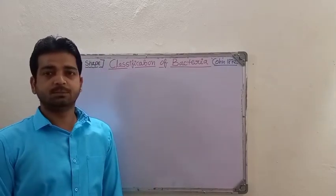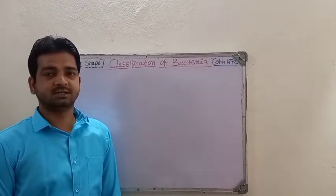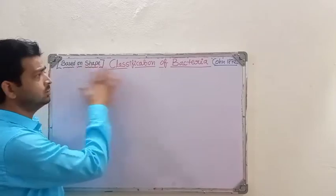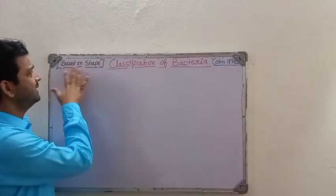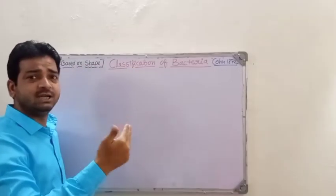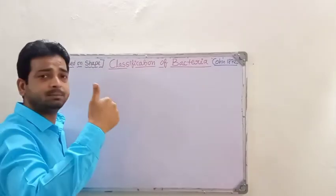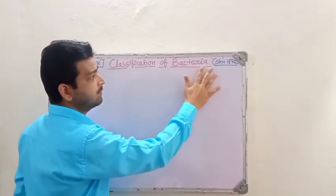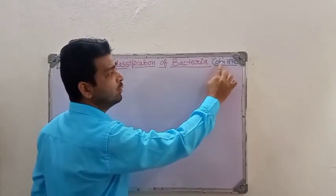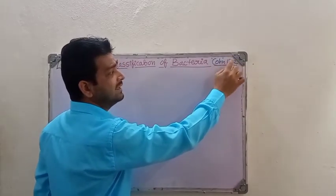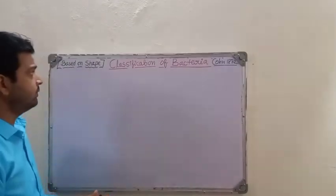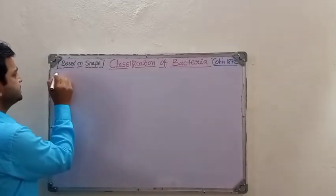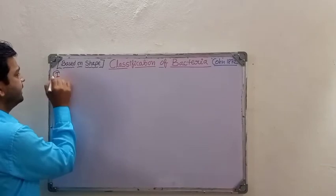Hello students, today we are going to discuss the classification of bacteria based on shape — what kind of structures they are going to have. This classification of bacteria was given by Cohn in 1872.